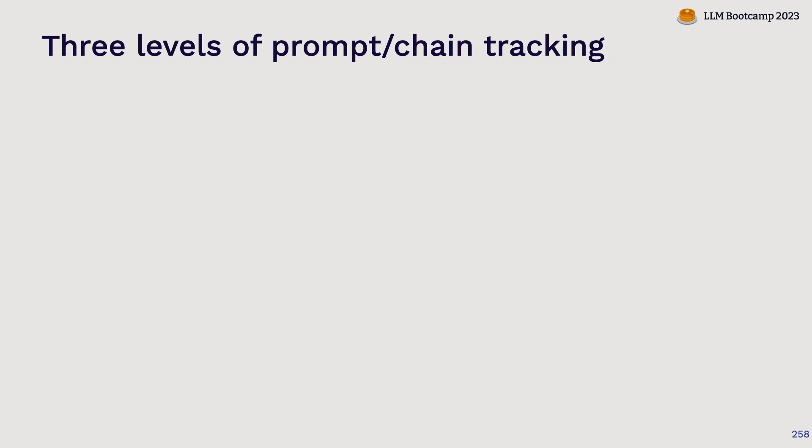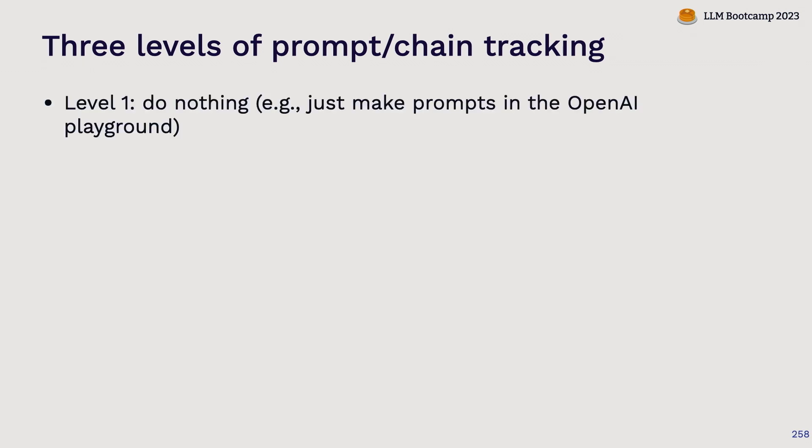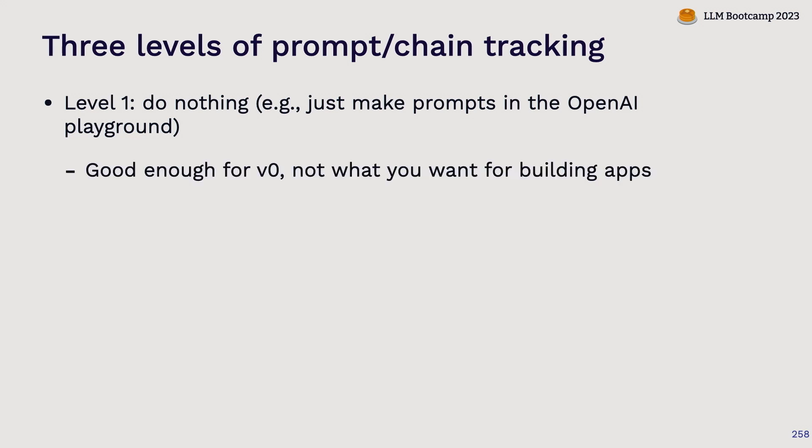Today, I see people doing this in roughly three ways. Level one is: do nothing. Just make your prompts in the OpenAI Playground, copy and paste the ones that work into a text file, share them in Slack with your team, save them directly in your code. That is usually actually good enough, honestly — especially if you're building a prototype. But this hits a limit when you're building applications or collaborating, and you need a more systematic way of managing prompts.